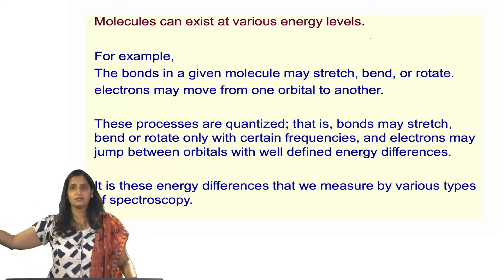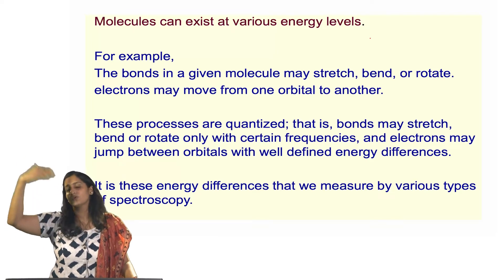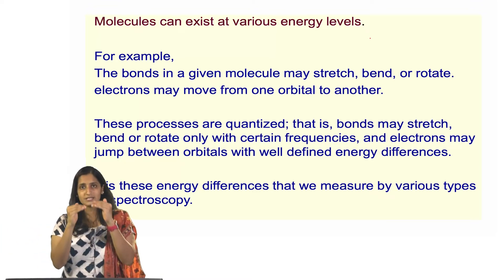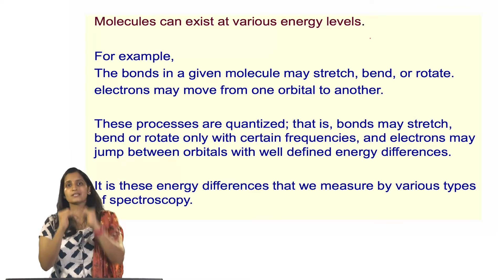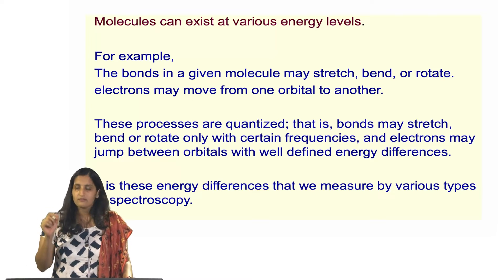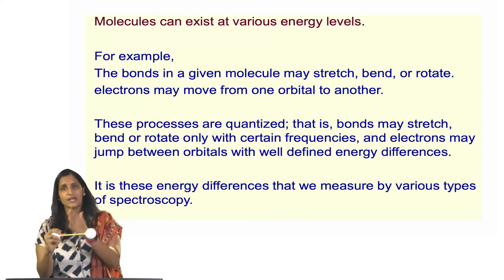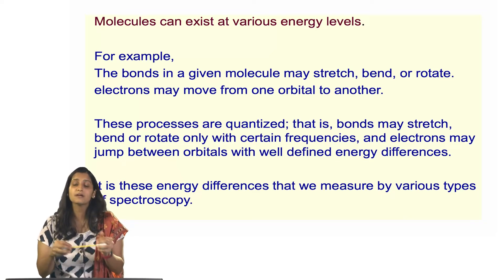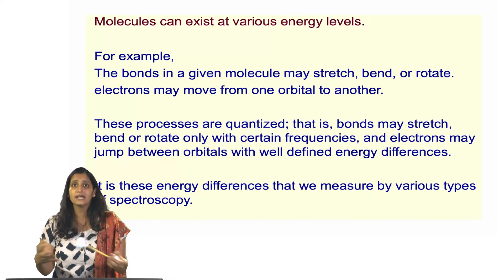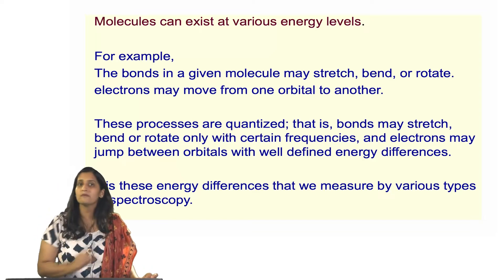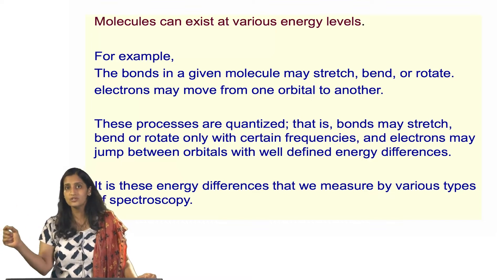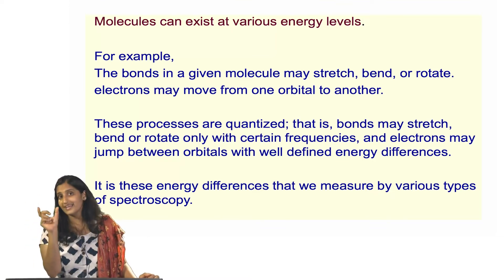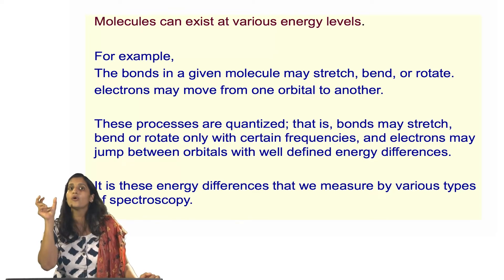Depending on the amount of energy given to a particular molecule, that also determines the transition. But these processes are quantized — meaning the bonds will stretch, bend, and rotate only at certain frequencies. Electrons when they jump also make quantized transitions: starting from level one, they can go to level three or level five, but not to 3.5 — it is a very measured transition from one state to another. We can measure all of these things with the help of the energy difference, because frequency is proportional to that energy, and from the energy difference we can understand what kind of bond is present.